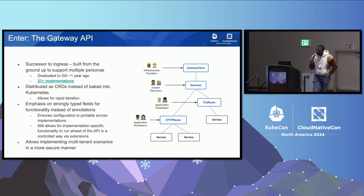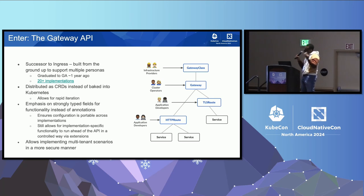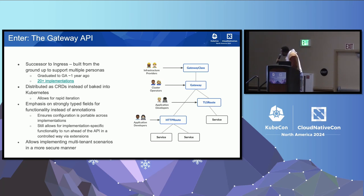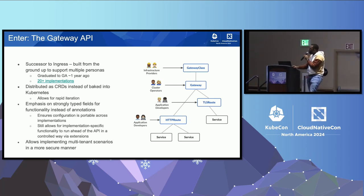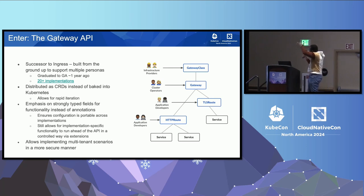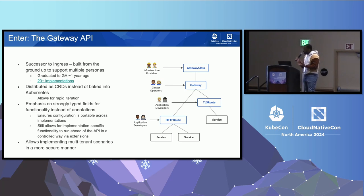Application developers are responsible for writing configuration just for their app. We've got a collection of resources called xRoute — they all end with the word 'route.' You've got HTTPRoute, TLSRoute, UDPRoute, TCPRoute, and even some talk about an LLM route for AI gateways. Routes are a family of resources describing routing configuration for a particular hostname or application. The application developers create an HTTPRoute that references a gateway, which references a gateway class — all these personas collaborating together.